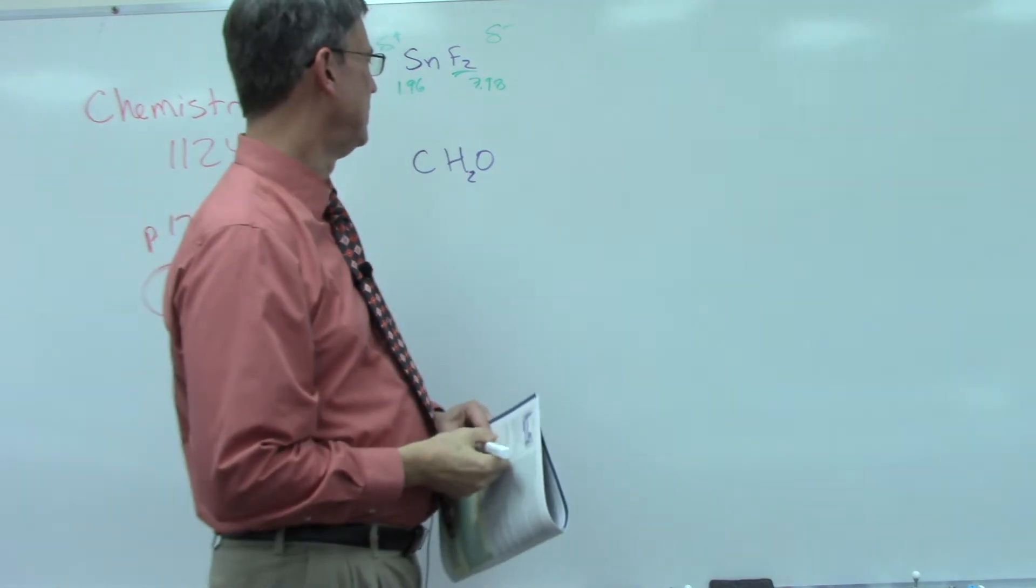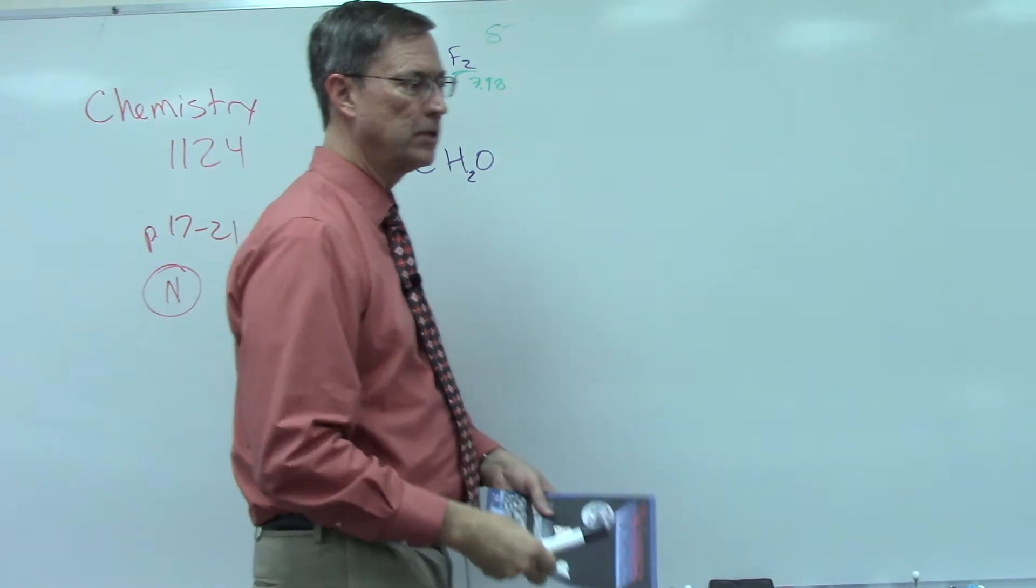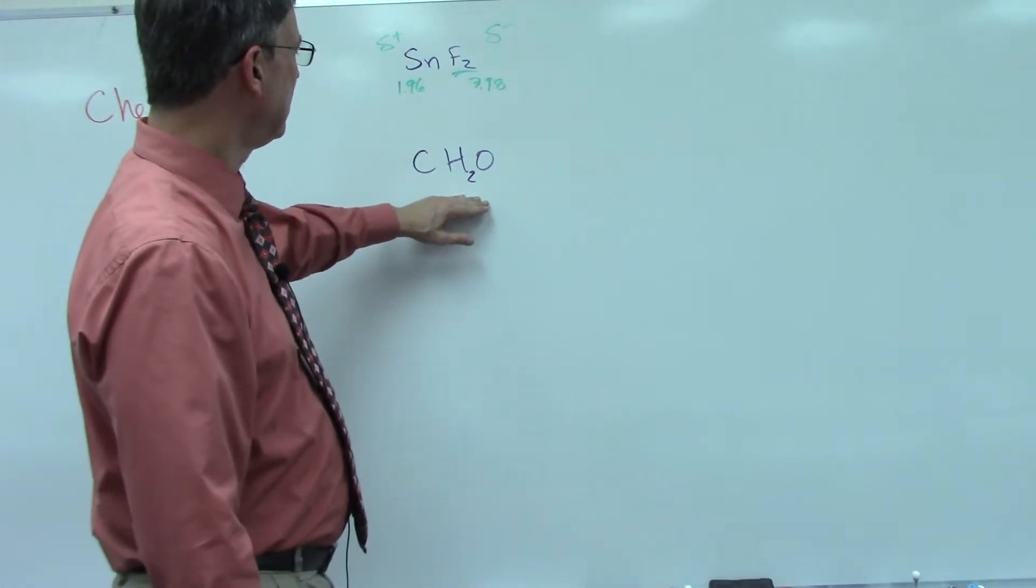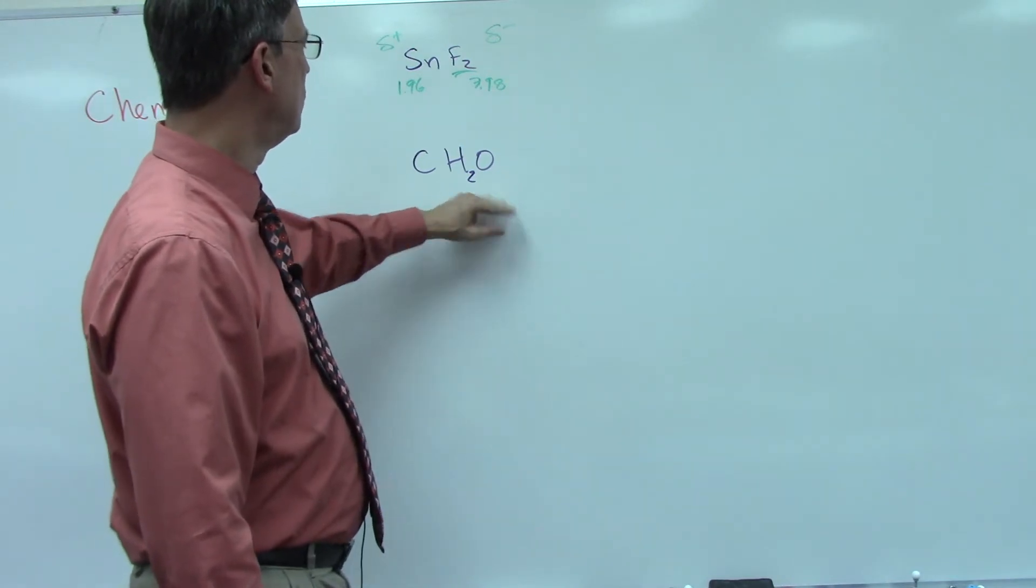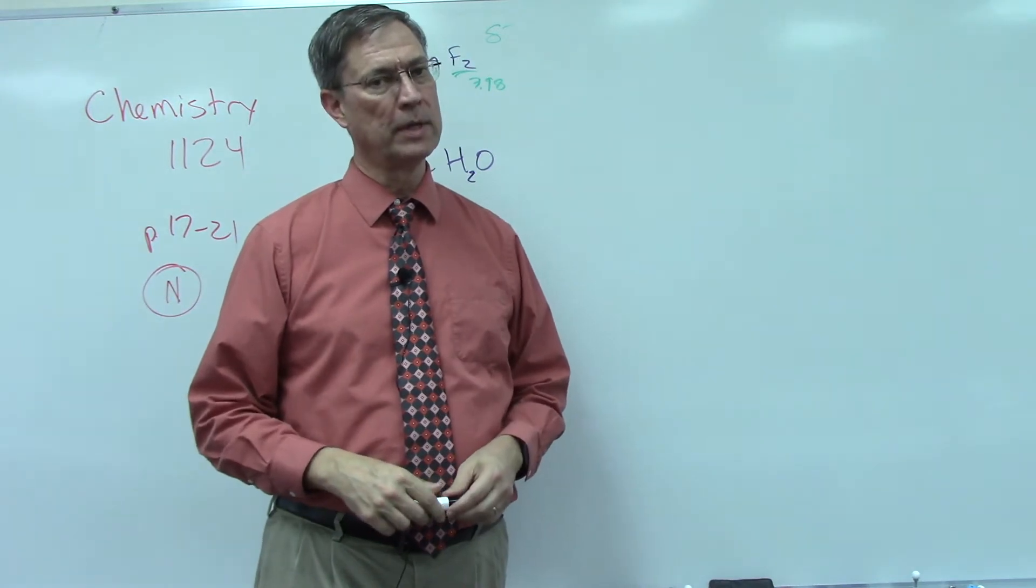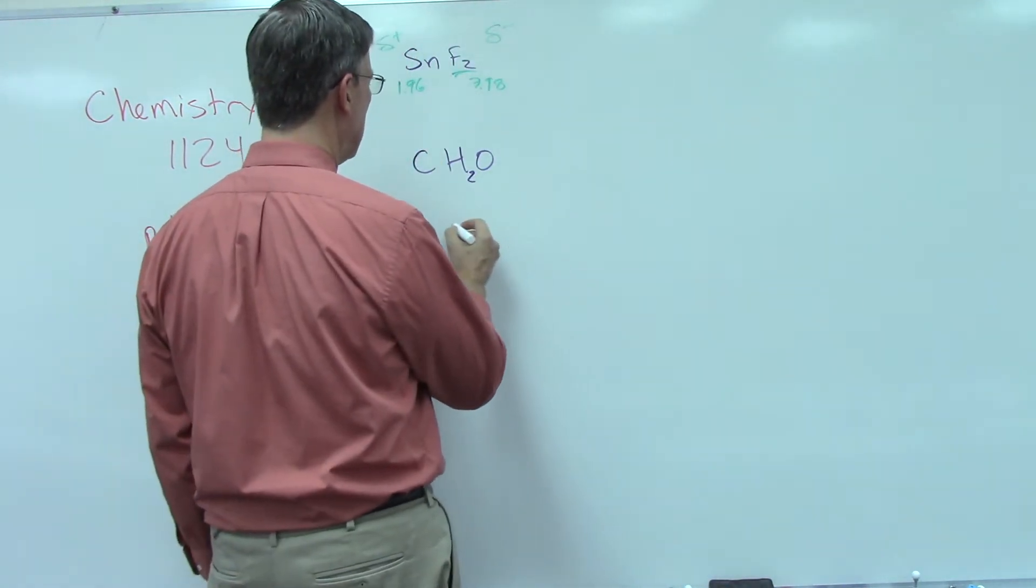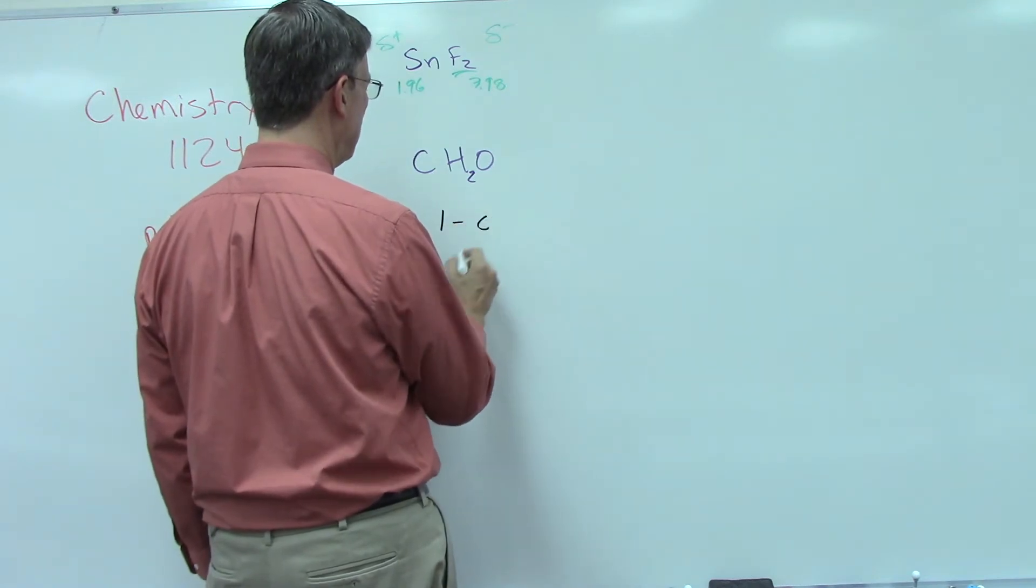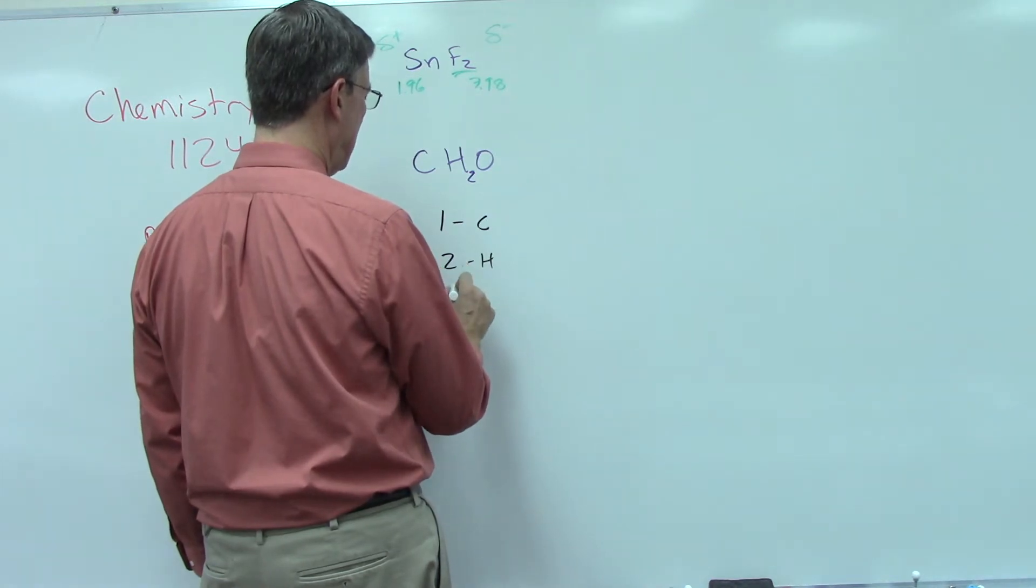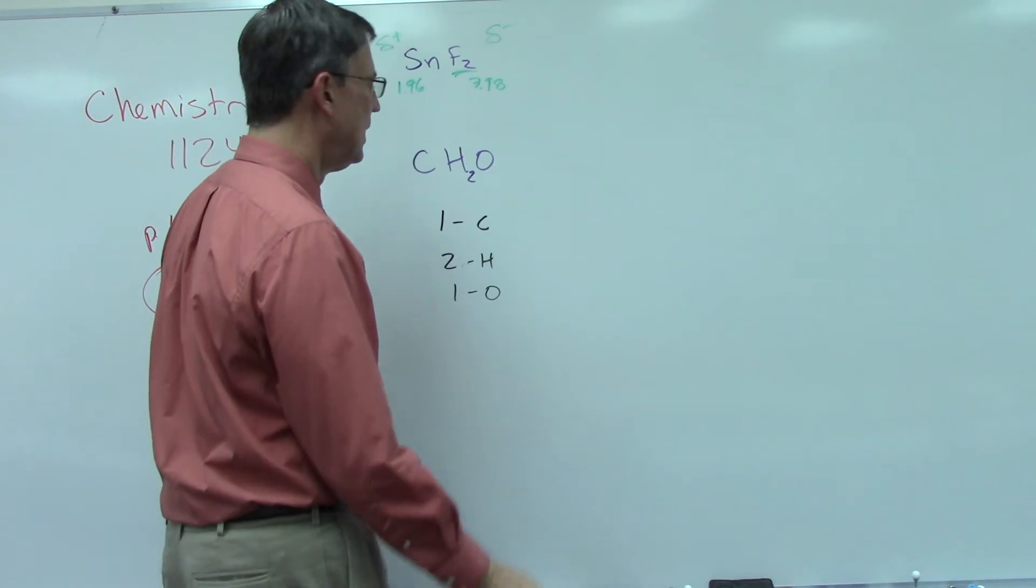Now let's talk about the next section. They tell us that we have CH2O and we're supposed to figure out what the molecule structure would look like. First of all, list what do we have: we have one carbon, two hydrogen, and one oxygen.